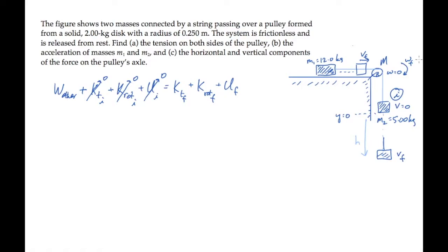Between the initial and this final state, there's no work done by other forces. So on the left hand side, we just have zero. On the right hand side, we have two contributions to the kinetic energy from translation. Masses 1 and 2 are both moving at speed vf, and a contribution from the rotation of the pulley. That's 1 half I omega f squared. Mass 2 has descended by a height h, so the final potential energy is minus m2gh.